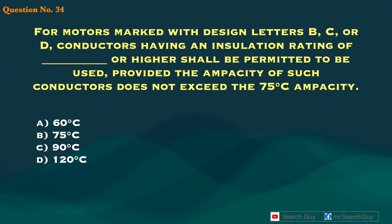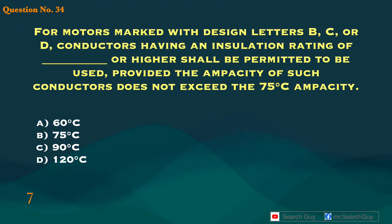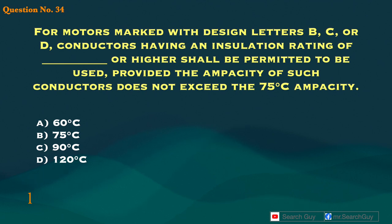Question 34. For motors marked with design letters B, C, or D, conductors having an insulation rating of blank or higher shall be permitted to be used, provided the ampacity of such conductors does not exceed the 75°C ampacity. A. 60°C. B. 75°C. C. 90°C. D. 120°C. Answer: B. 75°C.